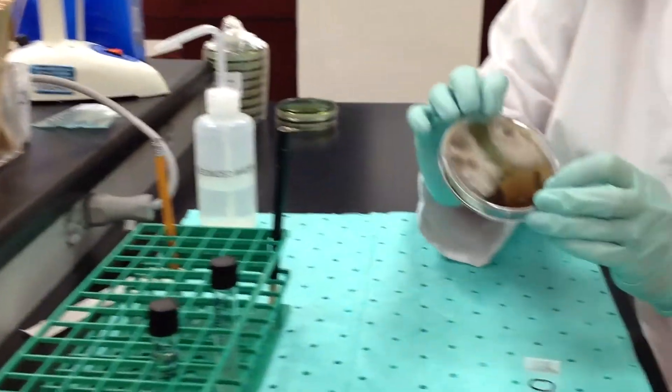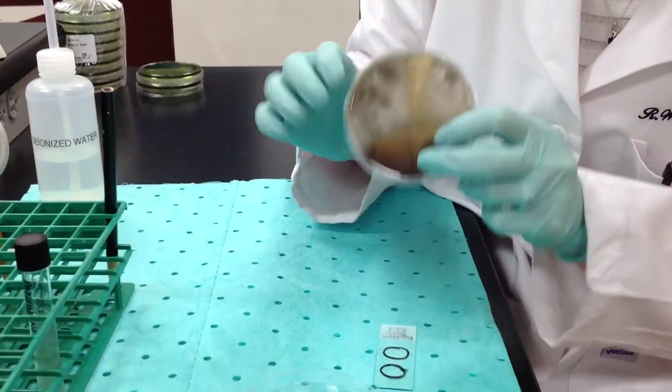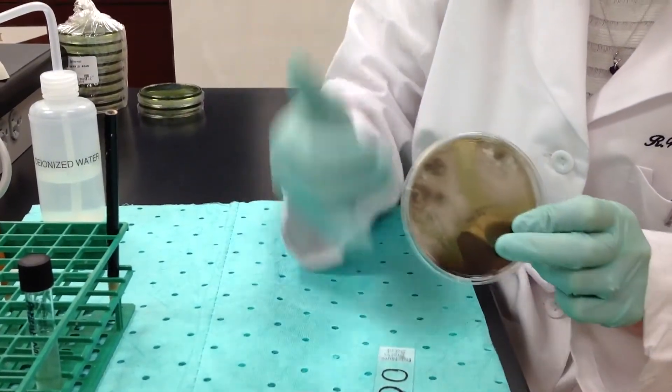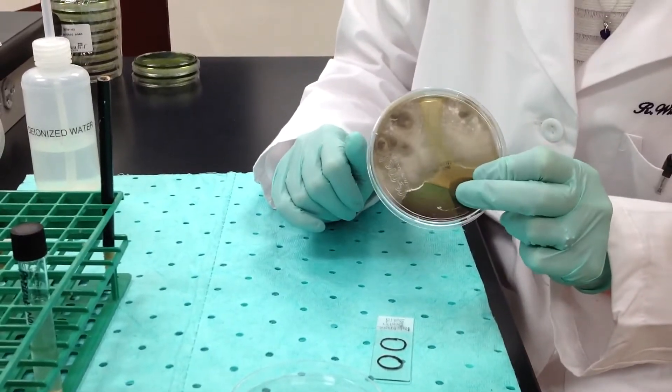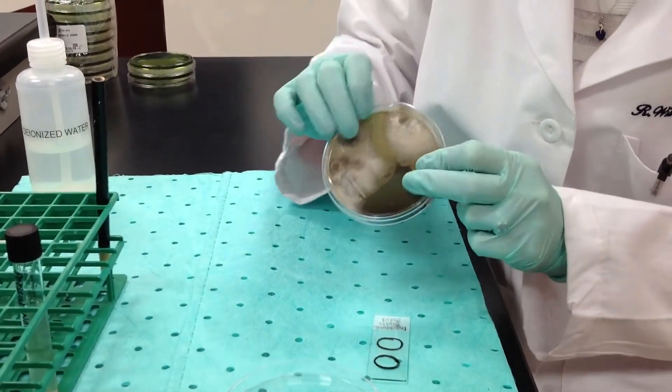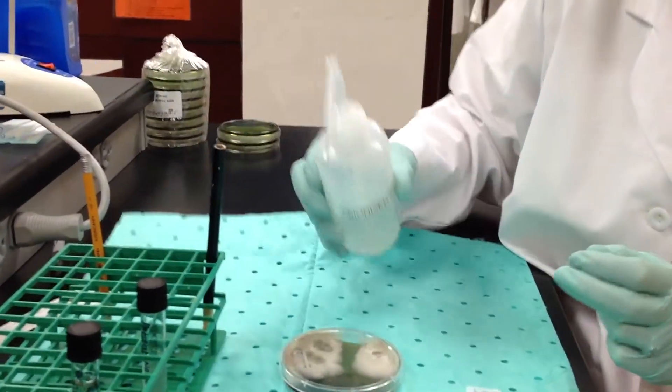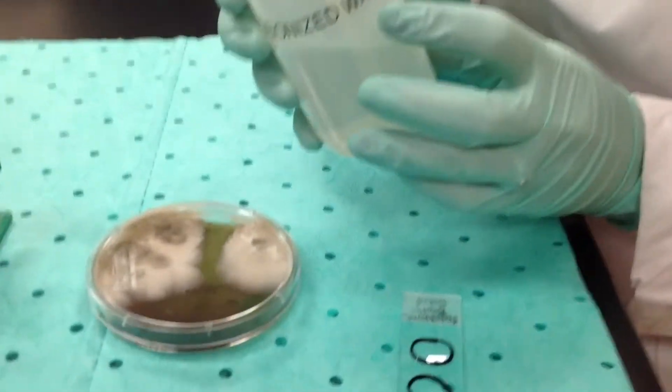Now with cultures from solid plates you need to have some kind of a liquid for the organisms to get resuspended in. So you can either use a drop of thioglycolate broth but the best thing to use is some deionized water.